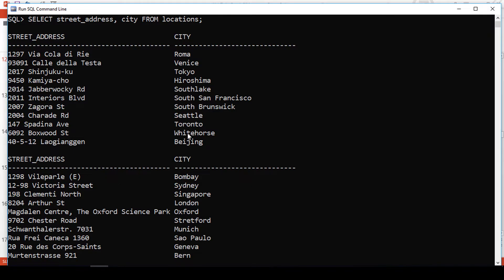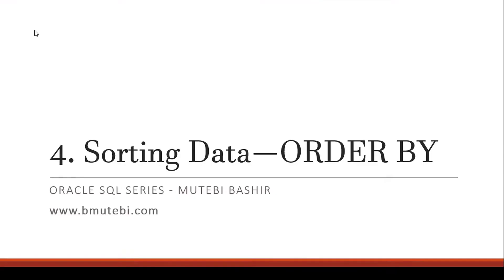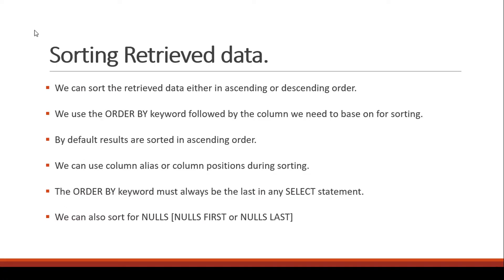For example, if I need cities to be in ascending order or descending order, or all the street addresses to be in ascending order or descending order — I may be interested in Beijing being the first, followed by Bombay, then Bern. In such a situation, we sort data and we use the keyword called ORDER BY. In SQL, we can sort data either in ascending order or descending order, depending on what we want. We use the ORDER BY keyword followed by the column we want to base on.